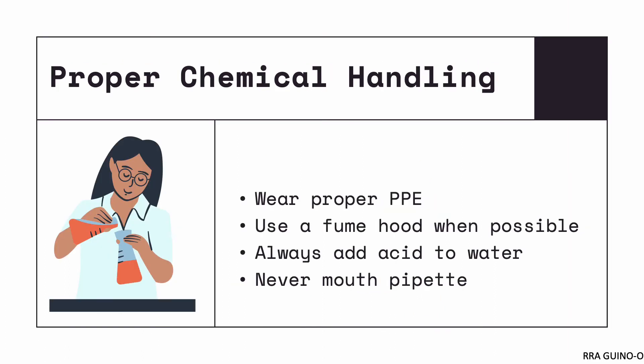Next, let's talk about rules for proper handling of chemicals. First and foremost, wear your proper PPE when handling chemicals. If you have a fume hood, always use it whenever possible, especially if using chemicals that produce a lot of vapors. If you don't have a fume hood, handle chemicals in a well-ventilated area to minimize risk. When mixing chemicals, always add acid to water and not the other way around, to prevent splashes. And finally, never mouth pipette.